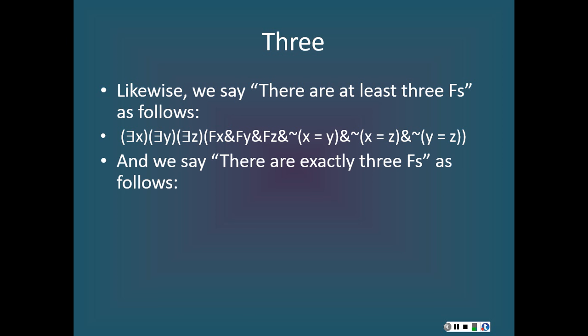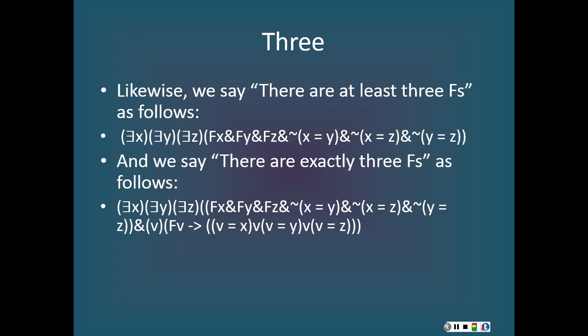Continuing with the pattern, we can also say that there are exactly three F's — it is a mouthful, but we can say it. There exists an x, and there exists a y, and there exists a z such that x is F and y is F and z is F, and it's not the case that x is identical to y, and it's not the case that x is identical to z, and it's not the case that y is identical to z. And furthermore, for any v, if v is F then v is either identical to x, or v is identical to y, or v is identical to z. This tells us that there are exactly three F's.